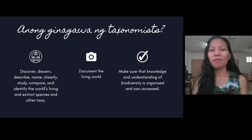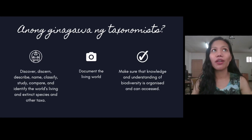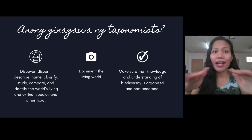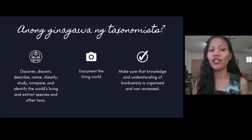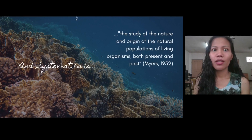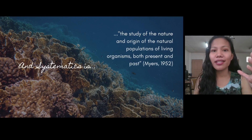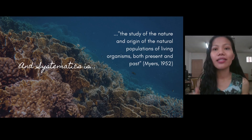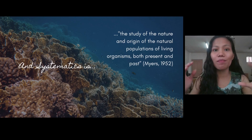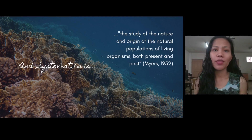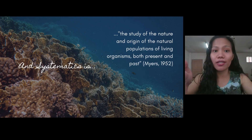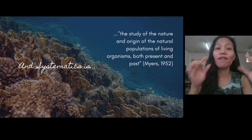Those are the things that taxonomists do, and they contribute enormously to the fields of zoology and botany. What then is systematics? Systematics refers to the study of organic diversity — the kinds and diversity of organisms — but also the relationships among them. It doesn't just look at diversity; it looks at diversity with evolution in mind, viewing diversity as a product of evolution.